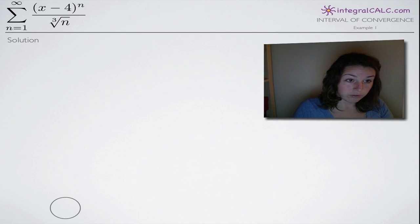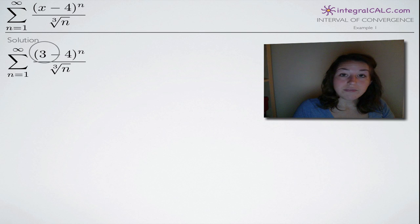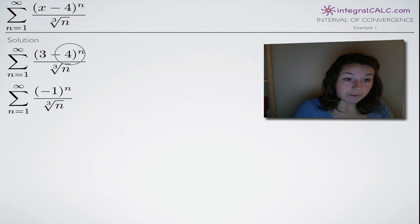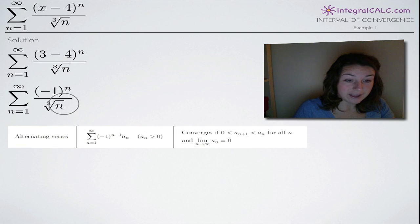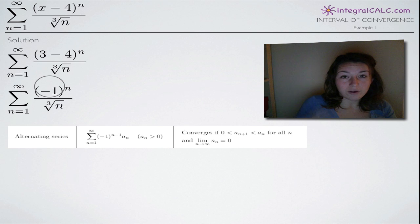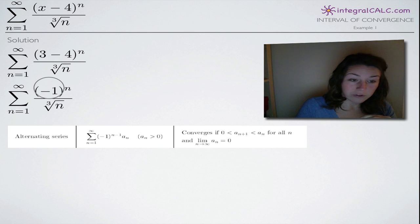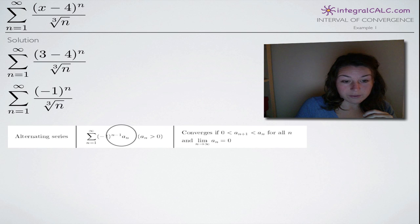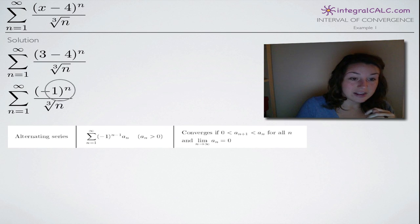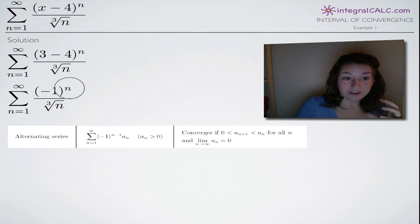Let's plug in 3 for x. We get (3 minus 4) to the n, which is (negative 1) to the n, divided by the cube root of n. Whenever you have negative 1 raised to the power of n, you know it's an alternating series — that's your dead giveaway. So in this case we apply the Alternating Series Test.